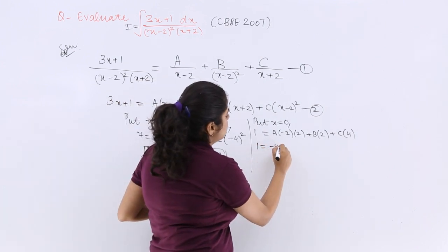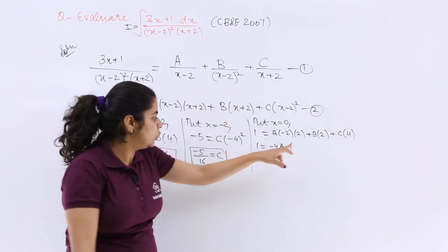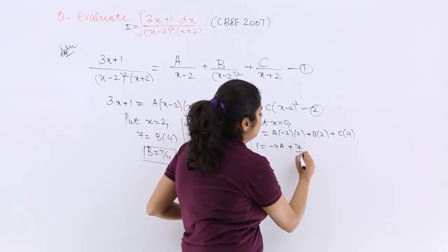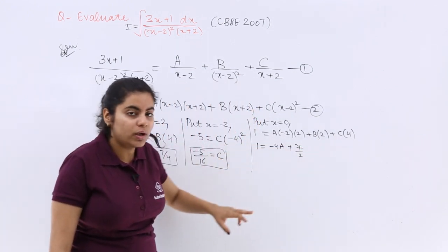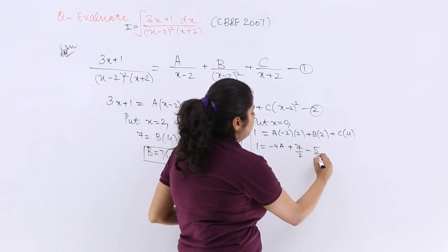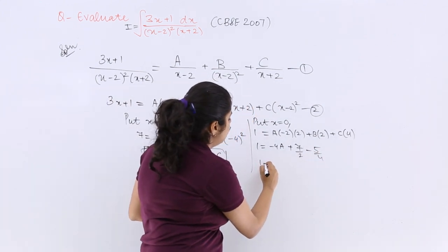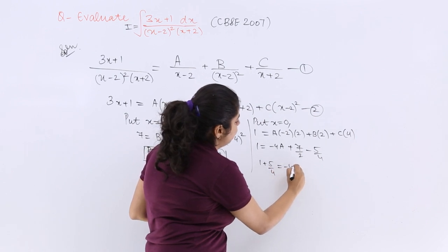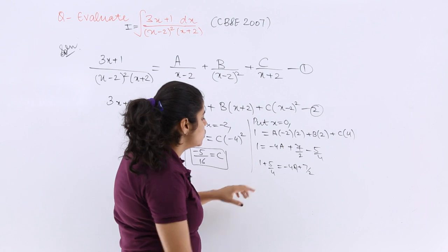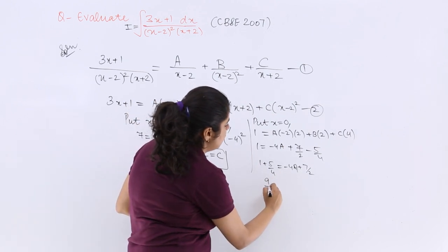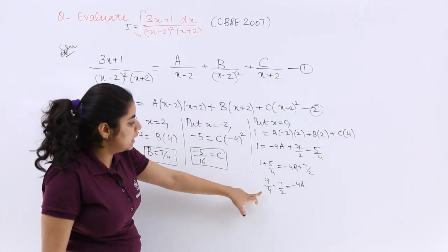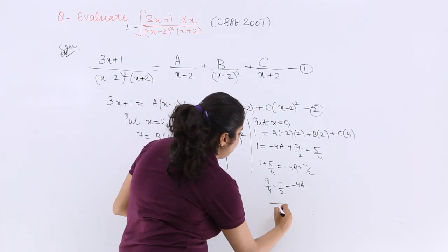So 1 is equal to minus 4A plus 2 into B. So it is 7 upon 4 multiplied by 2 plus 4 into C. So 4 into C makes it minus 5 by 4. Now 1 plus 5 by 4 is equal to minus 4A plus 7 by 2. Let me solve. So it is 4 plus 5 is 9 by 4 minus 7 by 2 is equal to minus 4A. Here let me take the LCM, it becomes 4.